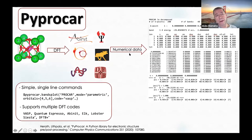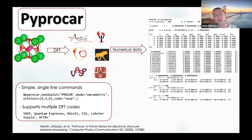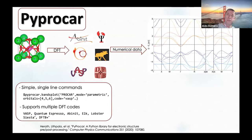PyProCAR is a package that has been interfaced with different electronic structure codes. Right now it's been interfaced with Abinit, Lobster, Quantum Espresso, Elk, VASP, and DFTB+. We are able to read the output of each one of those codes, read the numerical data, and plot the band structures with a single Python command.